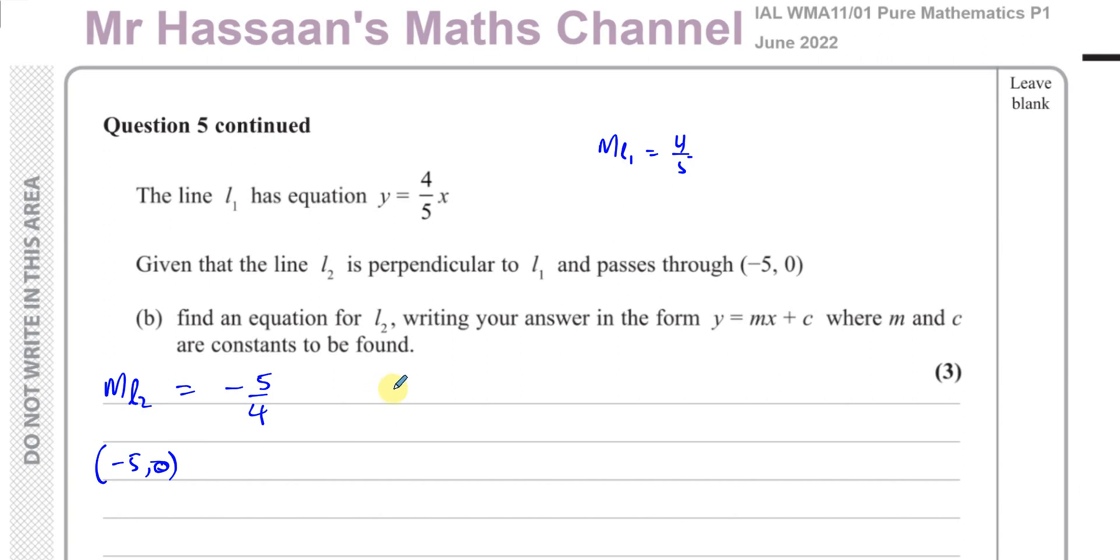So now we can use different methods. I like to use Y minus Y1 equals M times X minus X1, where this is the X coordinate of the point, X1, and this is the Y coordinate of the point that we have.